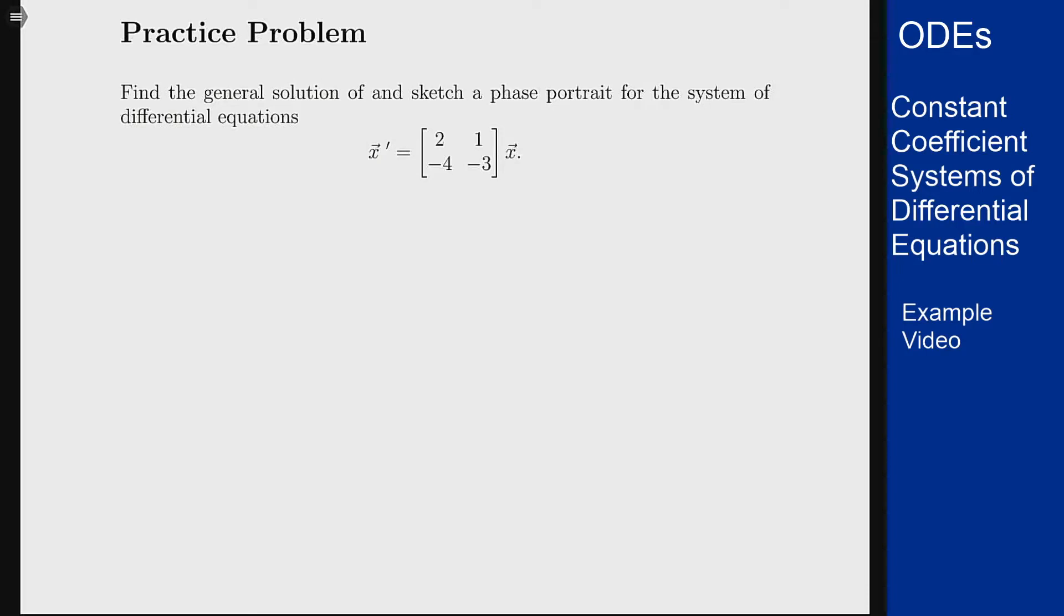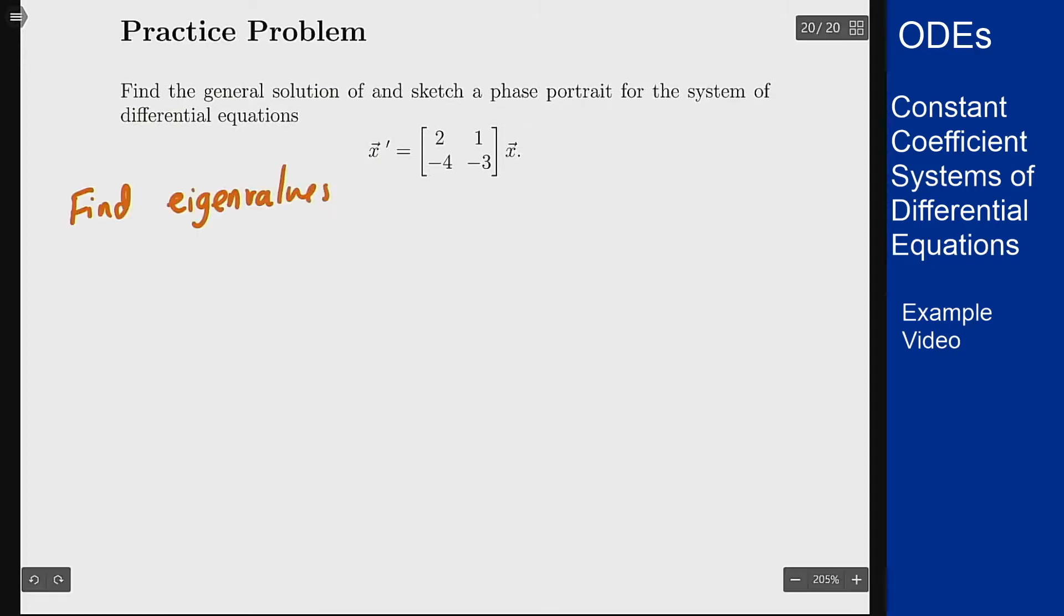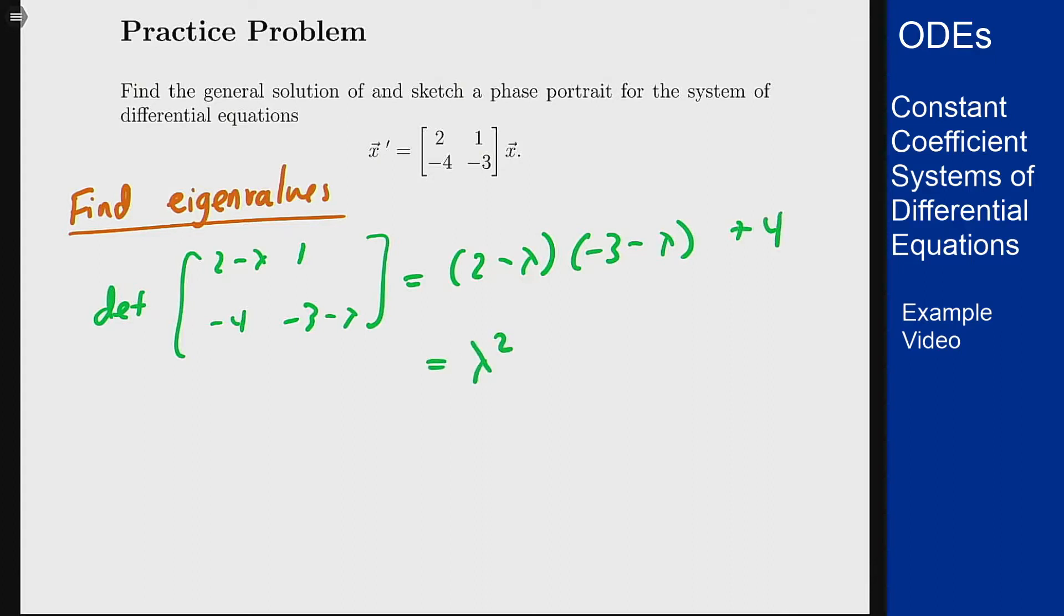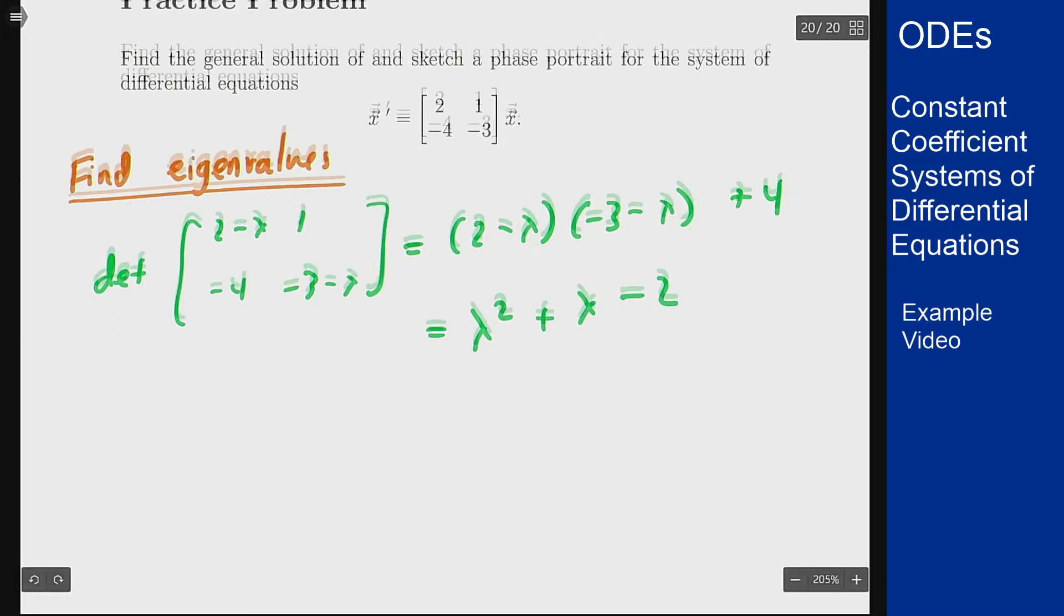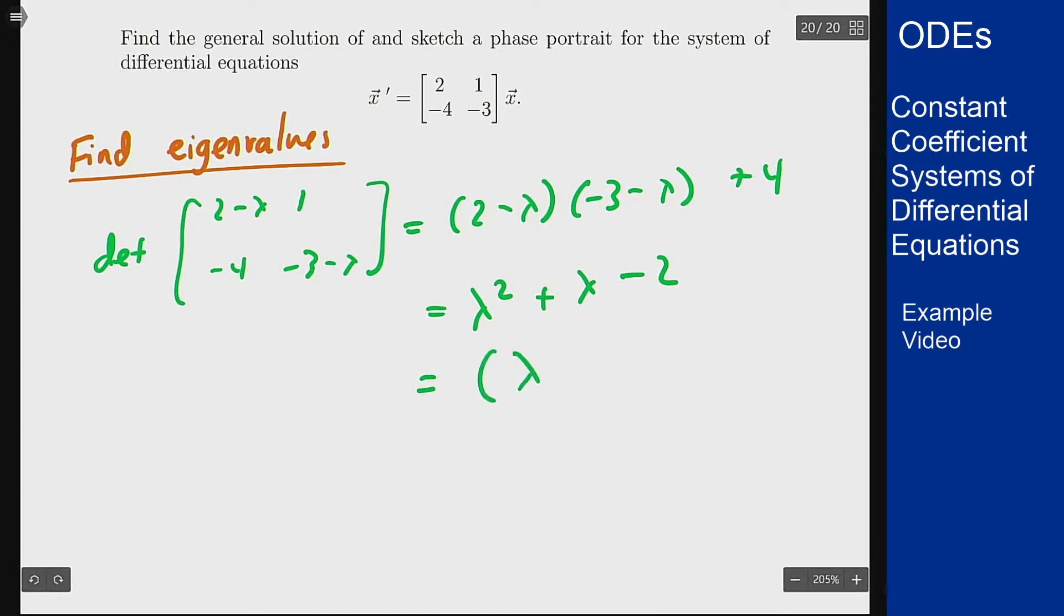For these systems our first thought is always to find the eigenvalues and eigenvectors to build a general solution. First we find eigenvalues by the determinant of (2-λ, 1; -4, -3-λ) which gives (2-λ)(-3-λ) + 4 = λ² + λ - 2, which factors as (λ+2)(λ-1). So we have two distinct real eigenvalues and can find general solutions by this method.